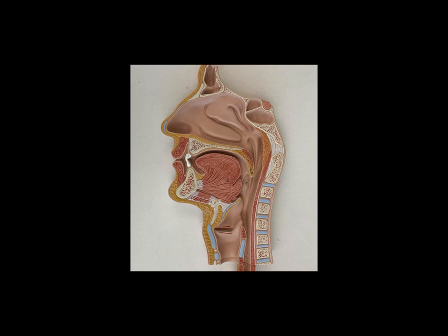Hi everyone. This is going to be a walkthrough of some of the digestive models for our Bio 139 lab. What we see here in this first image is a portion of the full digestive system model, just zoomed in to show some of the pieces that are a little bit smaller, to make them a little bit easier to see. We're looking at the head and neck in mid-sagittal view, so that we can see what's going on inside the mouth and the throat area.